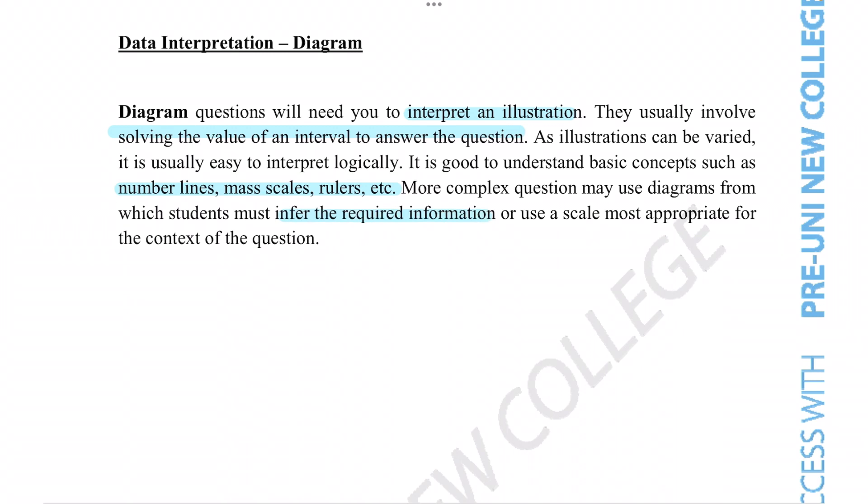So that includes reading anything and everything it gives you. So typically, data interpretation diagram questions will focus around things that can be measured. So for example, number lines, rulers, and mass scales are all quite common things you may encounter for these diagrams.